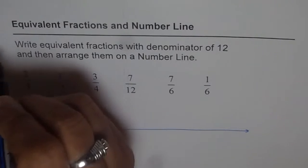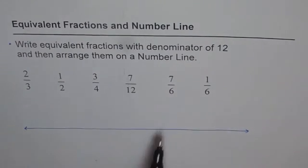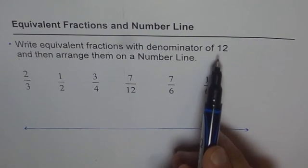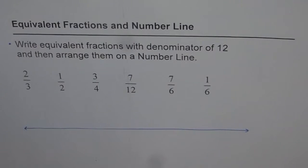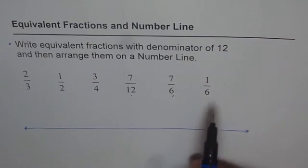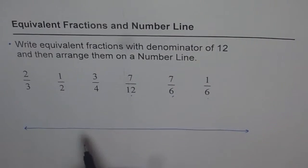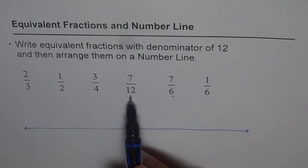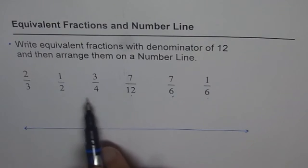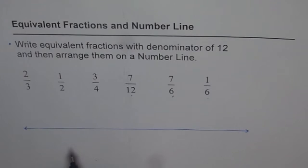Let's first do the first part of this question: write equivalent fractions with denominator of 12. Why denominator of 12? Let's look at those fractions: 2/3, 1/2, 3/4, 7/12, 7/6, 1/6. You will see that all of them are factors of 12 — 12 is a multiple of all these numbers. So we can easily have 12 as a common denominator for all these fractions.